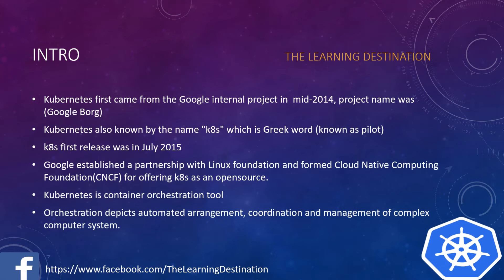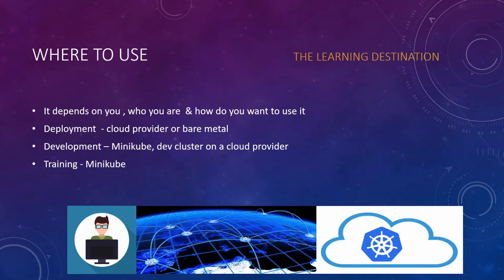The next topic is where to use Kubernetes. It depends on your role — whether you are a developer, trainer, or using it for production. It can be deployed on a cloud provider or bare metal. For development, a developer can use Minikube. Minikube is a one-node Kubernetes cluster which you can deploy on a single machine. You can also call it a dev cluster on a cloud provider. For training purposes, you can also use Minikube.